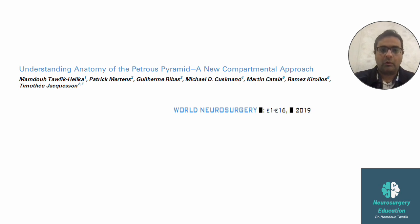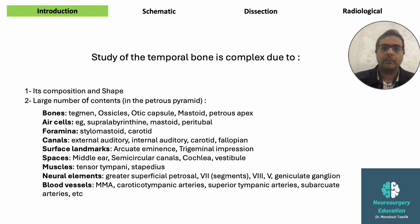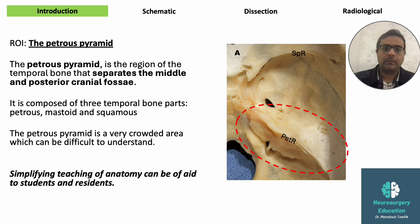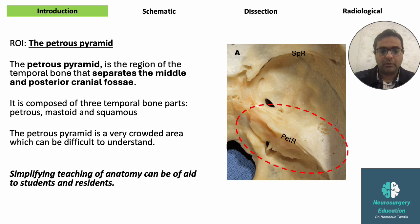This video is based on our work published in 2019. The temporal bone is a complex area with complex shape and many contents such as bones, muscles, canals and foramina, as well as blood vessels and nerves. In this figure is a superior view of the middle cranial fossa, located between the sphenoid ridge anteriorly and the petrous ridge posteriorly. The region of interest is the posterior part of the middle fossa — the petrous pyramid — which is pyramidal in shape, separating the middle and posterior cranial fossa. It's a crowded area, so we need to simplify its anatomy.